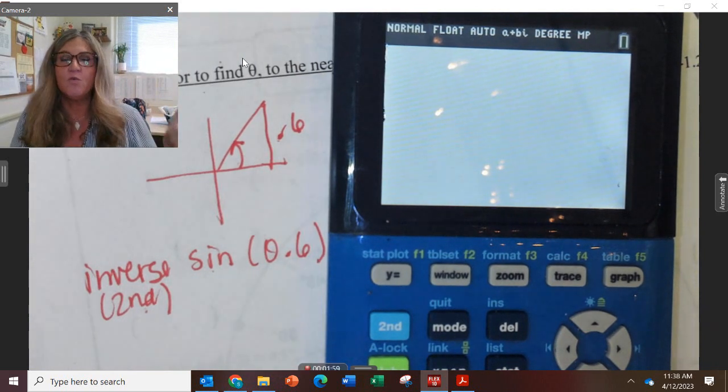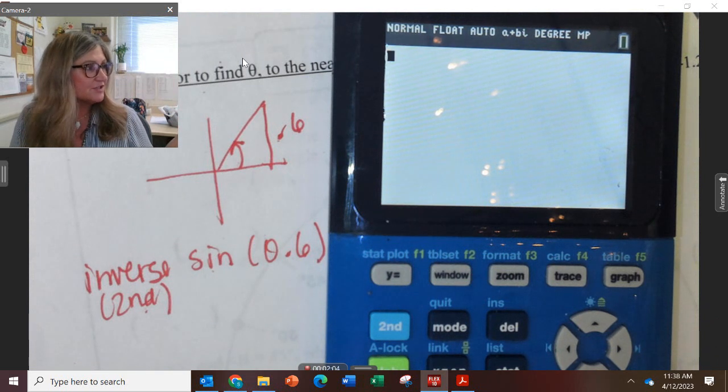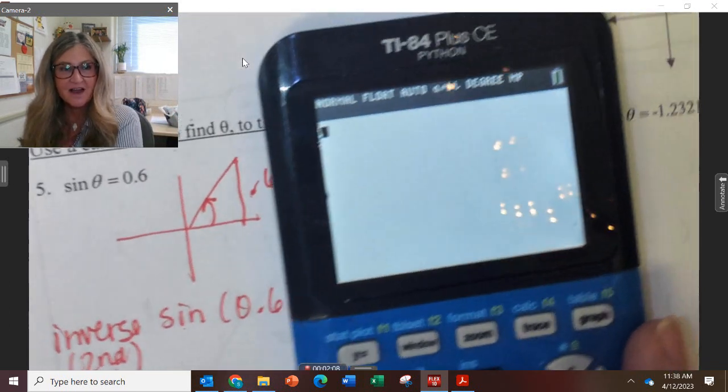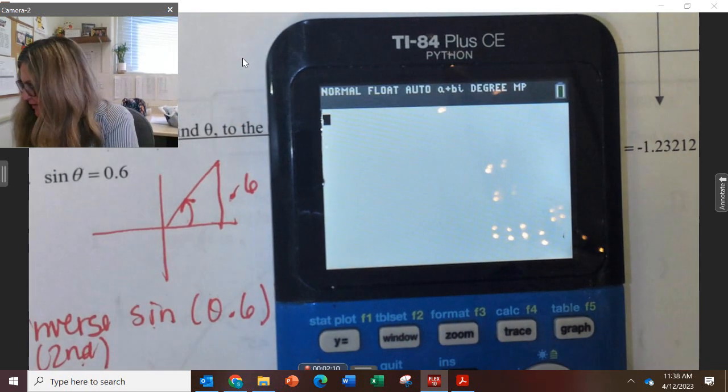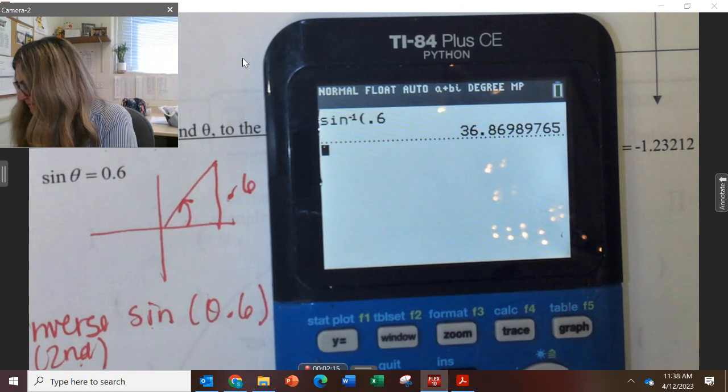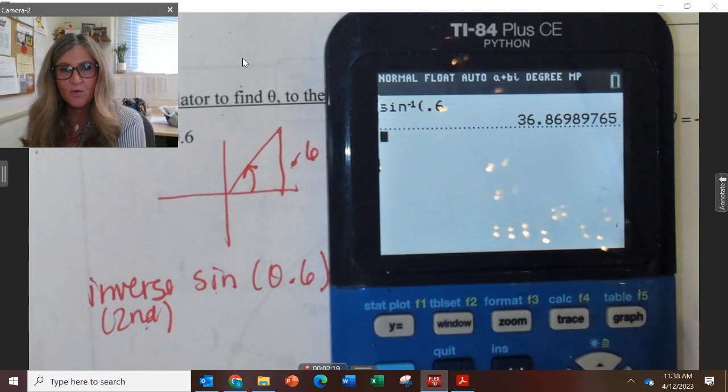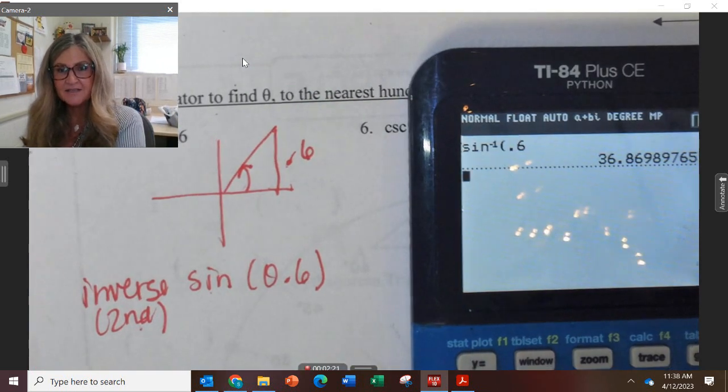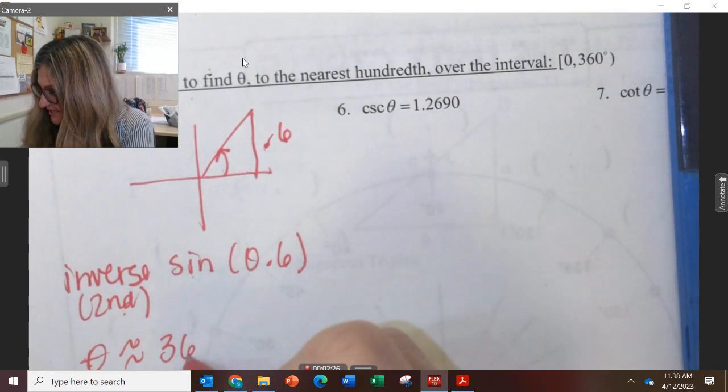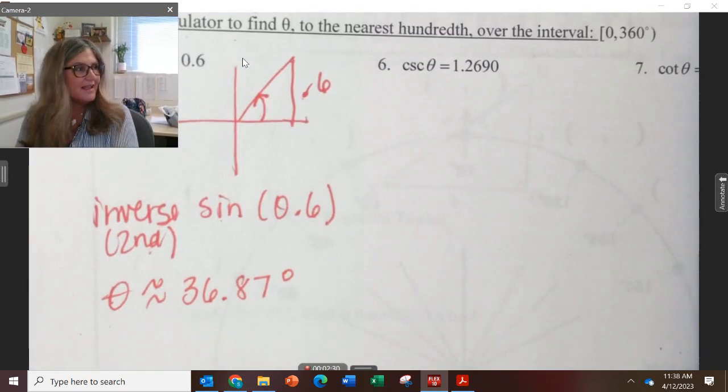Up to now, if I gave you this problem, I gave you a number like 1 half, radical 3 over 2, or radical 2 over 2, I gave you one of the special triangles. 0.6 is not a special value. So we go ahead and type it in. Second sine of 0.6, and there's the angle measure, 36.87. So one of the angles then is 36.87 degrees.